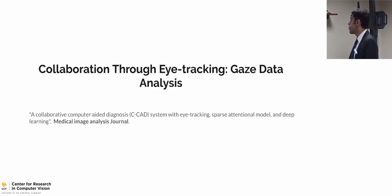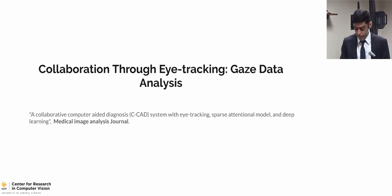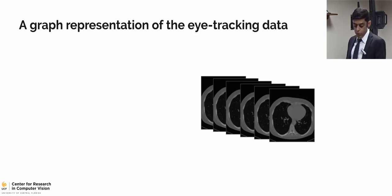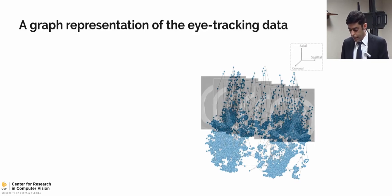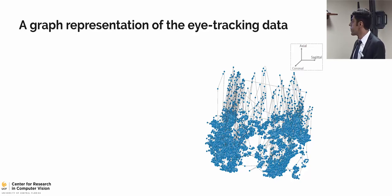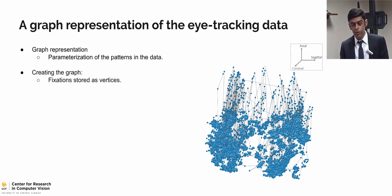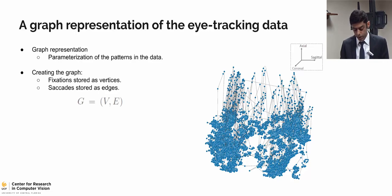The content of the first chapter — the design of how we collaborate using the eye tracker and extract the regions of interest — is published in the Medical Image Analysis Journal in 2018. This is an example of a 3D lung CT scan which radiologists normally screen during the cancer screening process, along with an example of eye-tracking data recorded from that scan. We propose to model the gaze data into graphs because it makes parameterization of the patterns easy. We create the graph using fixations as vertices and saccades as the edges.